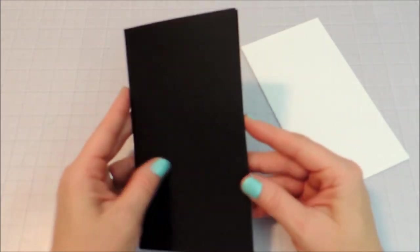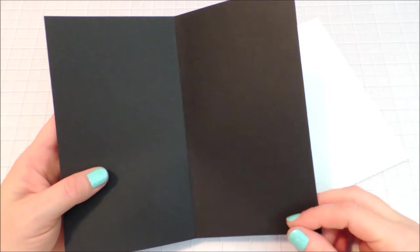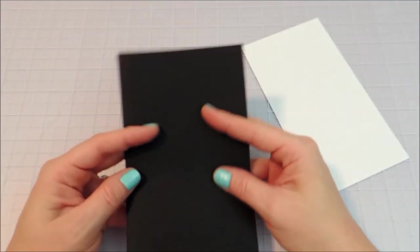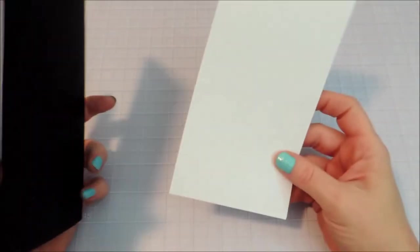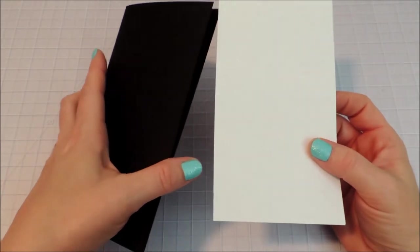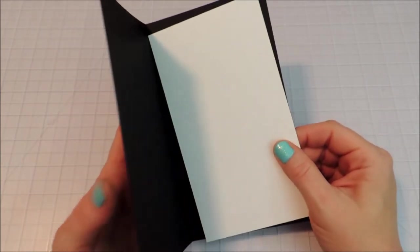So first of all, I cut this at 8 inches by 7 inches, and then just folded that right in half to create the 4 by 7. And then I cut a white piece to go inside so that we can write our sentiment, and I cut that at 3 3 quarters by 6 3 quarters.